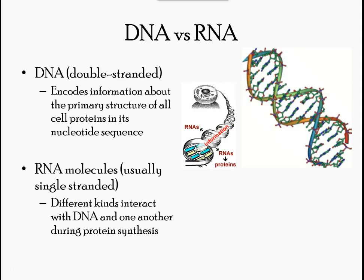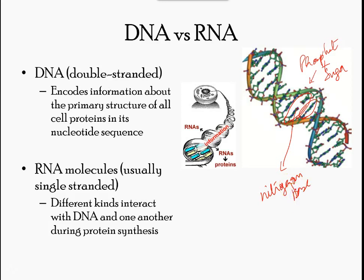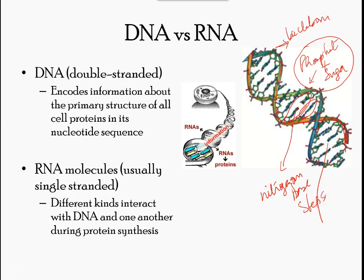DNA has a double helical structure and is composed of two strands, or polymers, of nucleotides. The strands are formed with bonds between phosphate and sugar groups of adjacent nucleotides, and the strands are bonded to each other at their bases with hydrogen bonds, coiling about each other along their length — hence the double helix description, meaning a double spiral. The alternating sugar and phosphate groups lie on the outside of each strand forming the backbone of the DNA, while the nitrogenous bases are stacked in the interior like the steps of a staircase. The bases pair and are bound to each other by hydrogen bonds, such that the distance between the backbones of the two strands is the same all along the molecule.